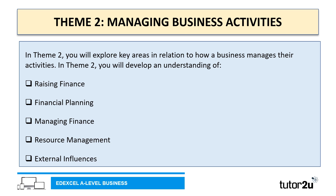Theme two is Managing Business Activities, and in this theme you will explore key areas in relation to how a business manages their activities and their operations. Specifically, you will look at issues such as raising finance and financial planning, managing finance and resource management, as well as some of the external influences that impact on a business.